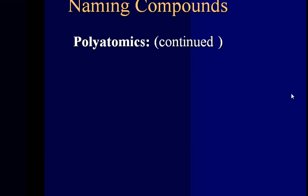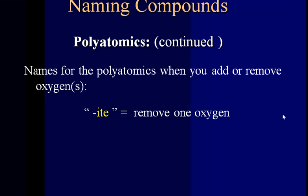Once you have the polyatomic ions memorized, there are more polyatomics that have the oxygen either added or removed from the base. It's actually only from 7 — we don't add or remove oxygen from acetate, hydroxide, or ammonium. So the rules I'm about to go over only apply to 7 of the polyatomic ions that you're required to memorize.